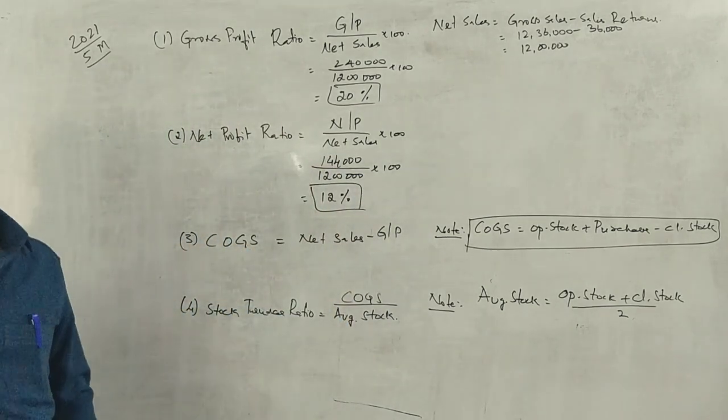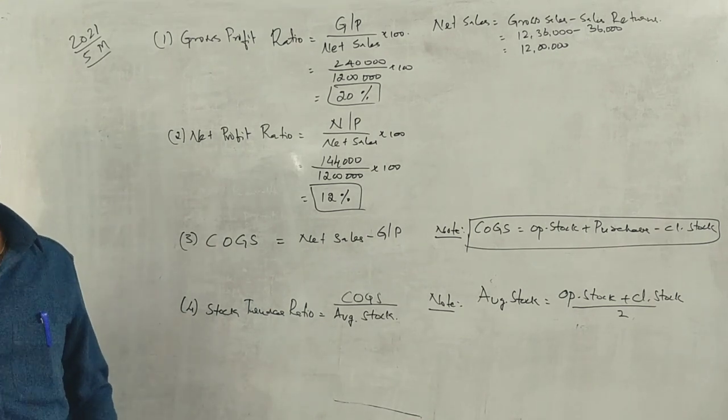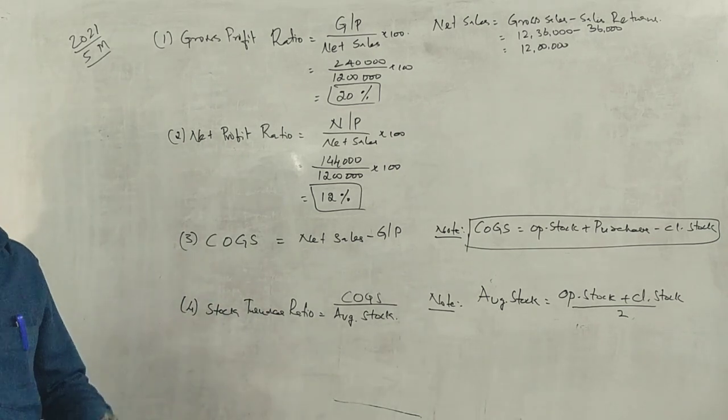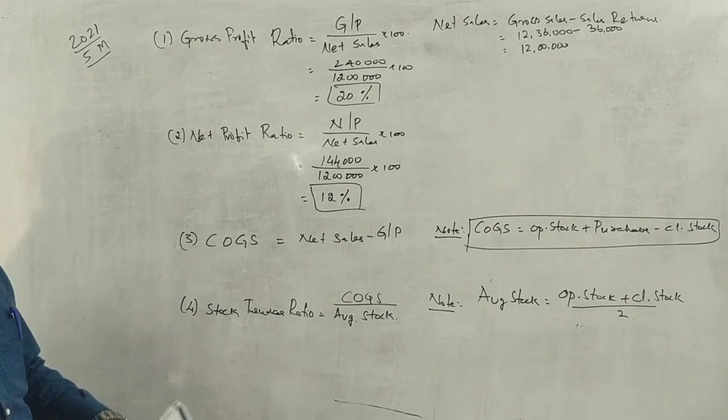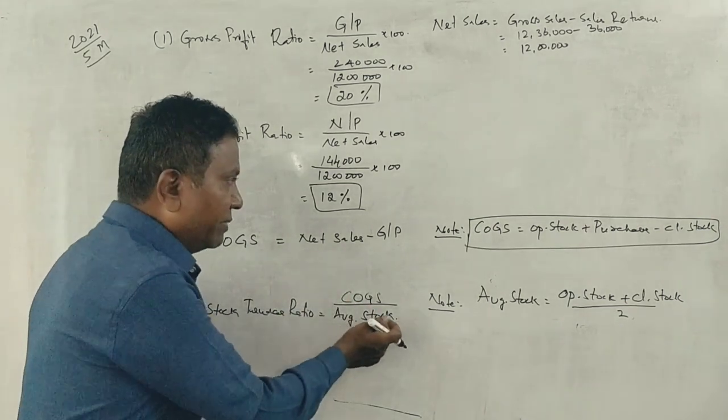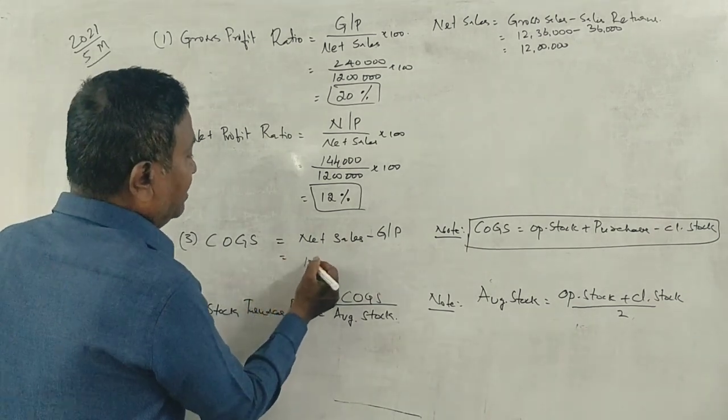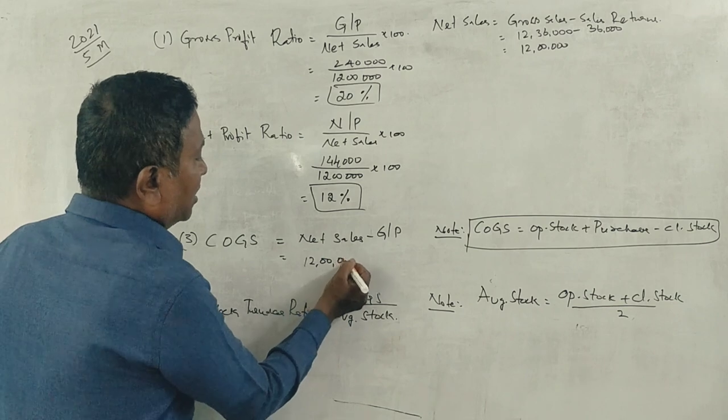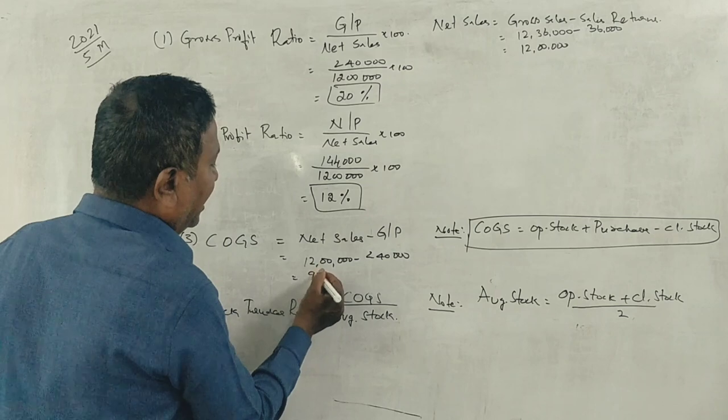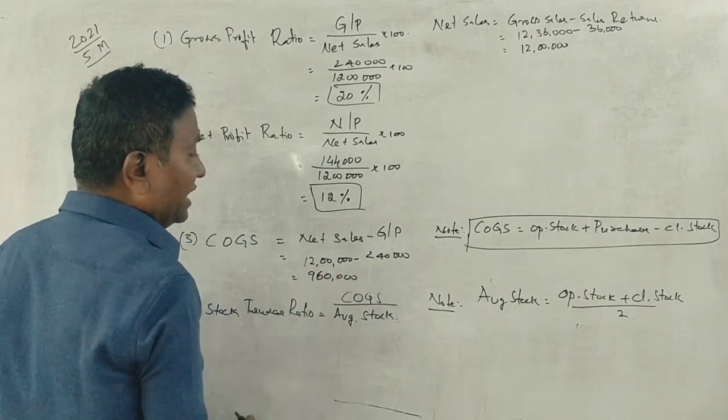Cost of Goods Sold equals Net Sales minus Gross Profit. That's 12,00,000 minus 2,40,000, which gives us 9,60,000. Correct? Yes, sir.